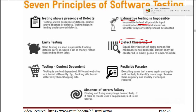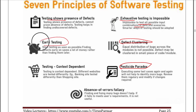Other principles include: testing shows presence of defects; early testing is very important; and testing should be context dependent — meaning the software should be tested in the same environment and context in which users will use it. Now we must support our answer using the 7th principle.